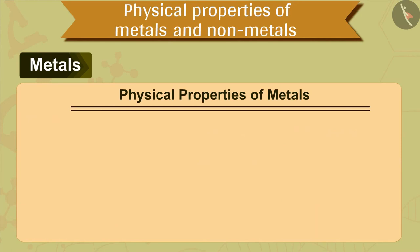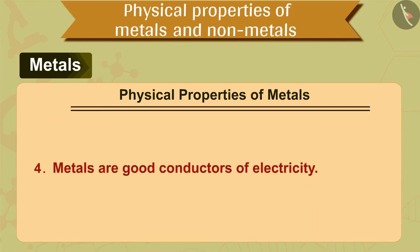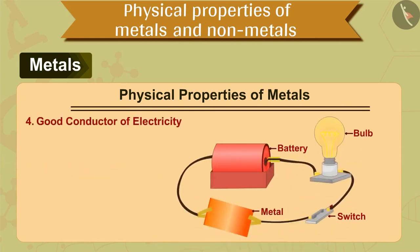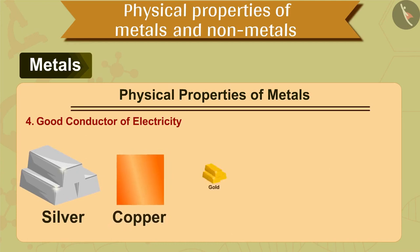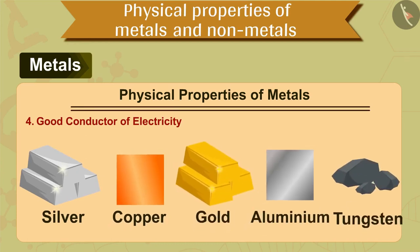The fourth property is that metals are good conductors of electricity. That is, they allow electric current to pass through them easily. Silver metal is the best conductor of electricity. Copper metal is the next best conductor of electricity, followed by gold, aluminium and tungsten.